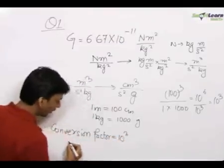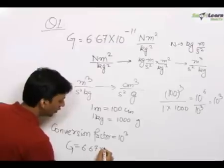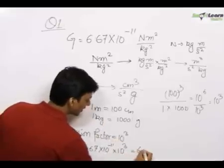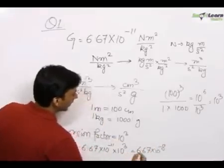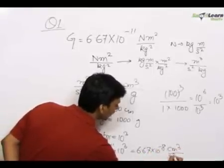So basically the value of G in CGS system is 6.67 times 10 raised to the power minus 11 times 10 to the power 3, which equals 6.67 times 10 raised to the power minus 8. The unit is centimeter cubed upon second squared times grams.